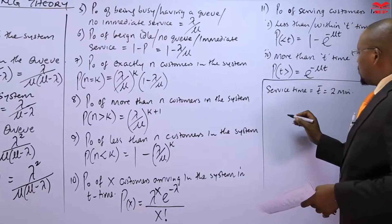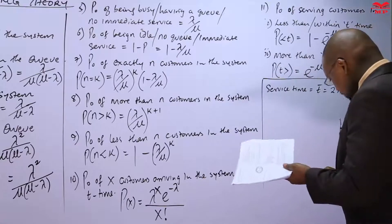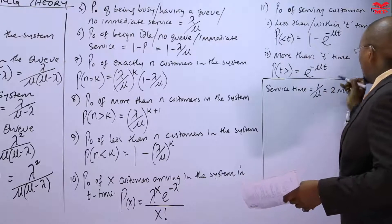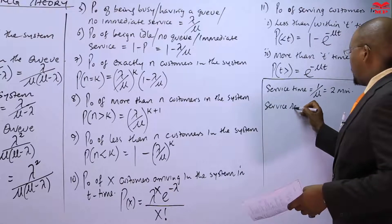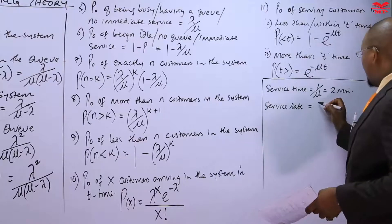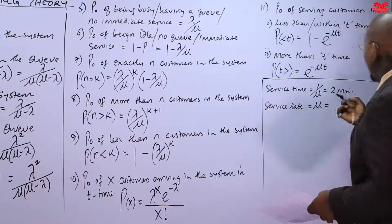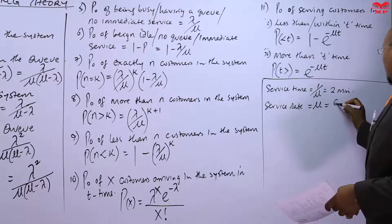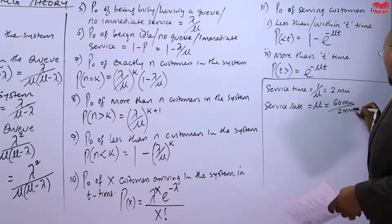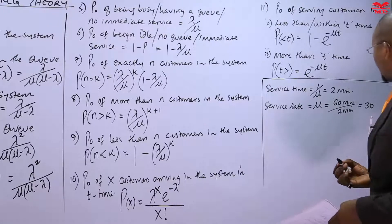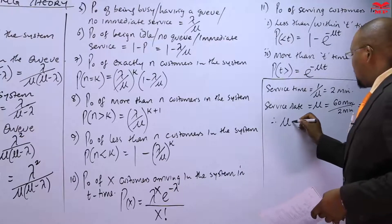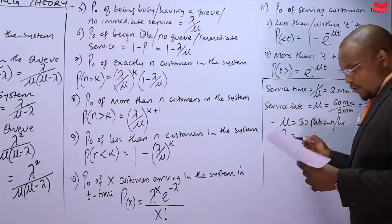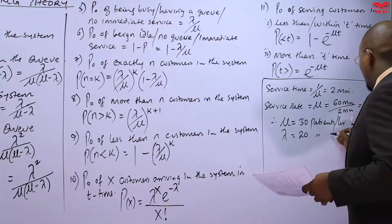The service rate is the inverse of the service time — one over the service rate. So should we want to know the service rate, we take the inverse of the service time. The service time is two minutes, but in one hour there are 60 minutes. We divide 60 minutes by two minutes to get 30. So the service rate is 30 patients per hour, while the arrival rate is 20 patients per hour.